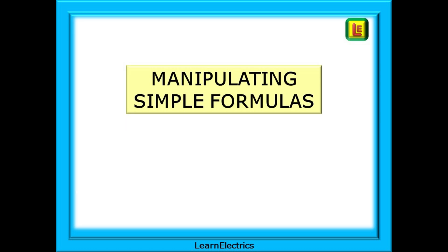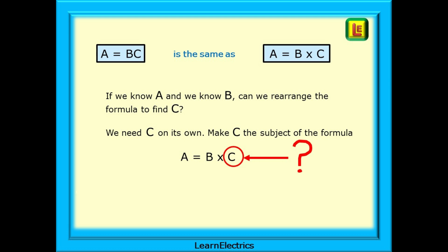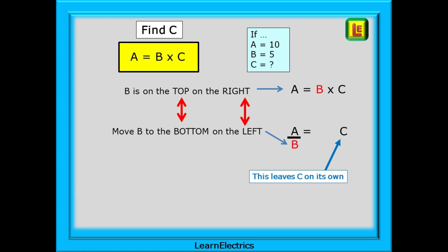We can begin with some very simple formulas, although in truth they are all easy to rearrange if you follow the steps. Look at this very basic formula A equals BC, which can also be written as A equals B times C. Let's say that we know A and we know B, can we rearrange the formula to find C. We need to find a way to have C on its own and we call this making C the subject of the formula.